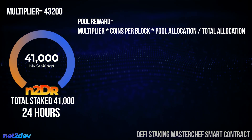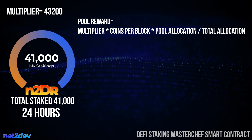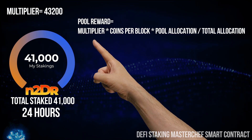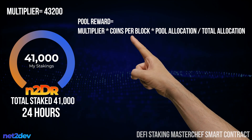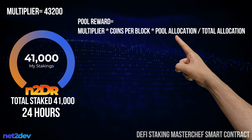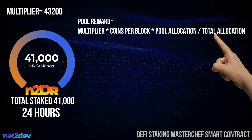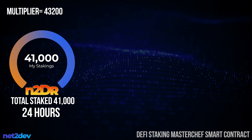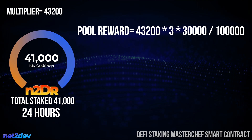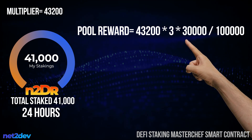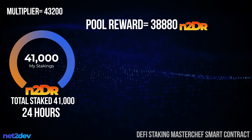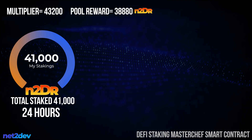The pool reward is the amount of tokens that the MasterChef smart contract designates to each staking pool to distribute among its staking members. To solve it: take the multiplier (43,200), multiply by the reward tokens minted per block (3), multiply by the pool allocation (30,000 basis points), then divide by the total allocation (100,000 basis points). We end up with a pool reward of 38,880 tokens every 24 hours for this staking pool.